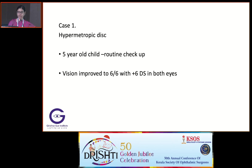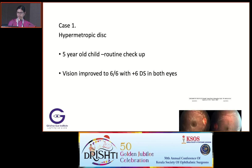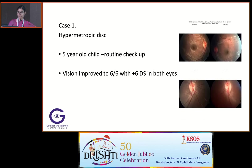Coming to the cases: a five-year-old child came for a routine examination and the disc showed bilateral blurring of disc margins. But with plus six dioptre sphere, the child's vision improved to 6/6. So it is a case of hypermetropic pseudodisc edema.